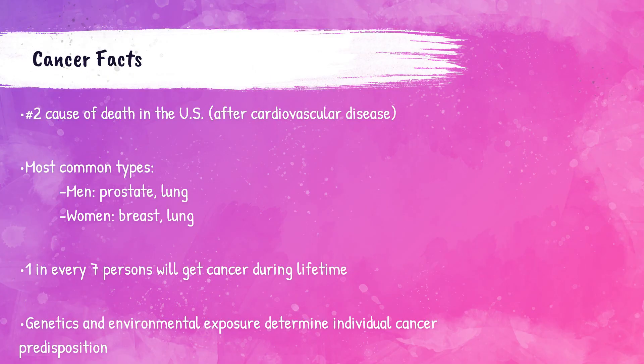So we've all heard of cancer, but what is its definition? Cancer is defined as a disease in which some cells in the body start to grow uncontrollably and spread to other parts of the body. It's currently the second leading cause of death in the United States, with cardiovascular disease being ranked number one. It's estimated that one in seven people will develop cancer during their lifetime, with genetics and environmental exposures leading to the cause.